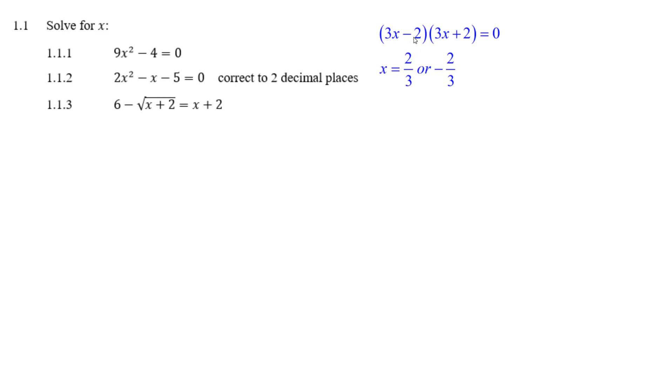3x plus 2, and you can equal 0. So that's how it factors, and you can see 2 over 3 is the solution, or negative 2 over 3.